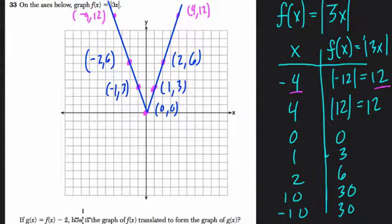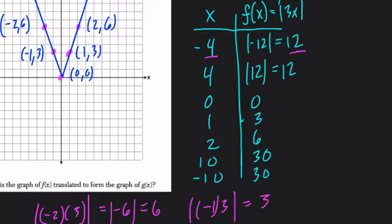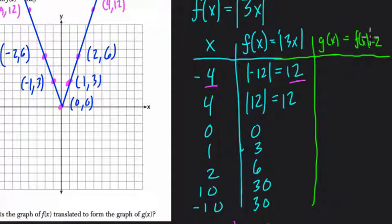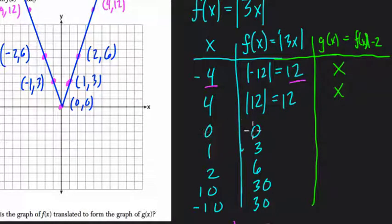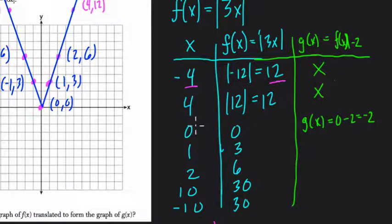They want to know: if G(x) equals F(x) minus two, how is the graph translated? Basically, it's telling us to subtract two from all of our outputs. We can add another column for G(x) in our table. G(x) equals F(x) minus two. If I input zero into F(x) I get zero, so G(0) equals zero minus two, which is negative two. That means one of the points is zero comma negative two — we can see we're starting to shift these points down.